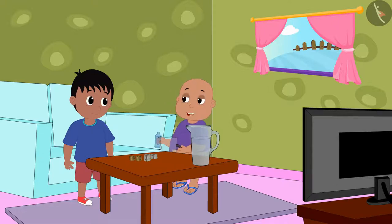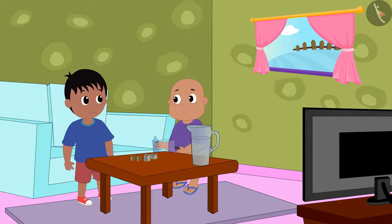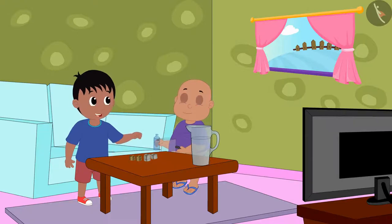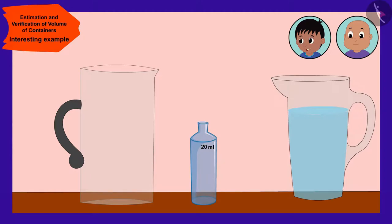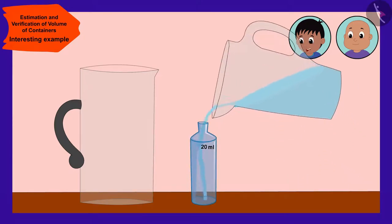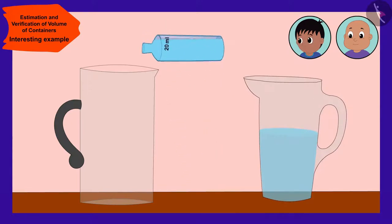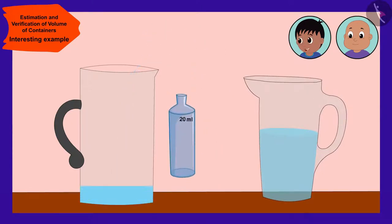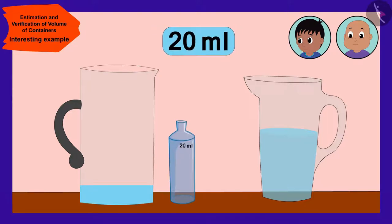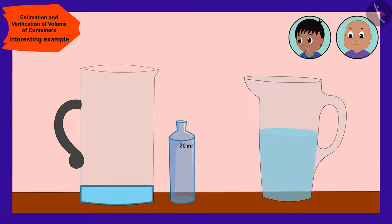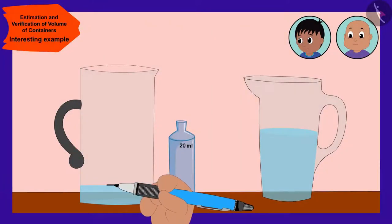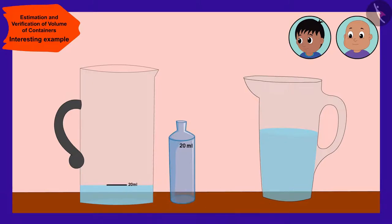And I have brought this jug too. First, we will fill this empty bottle completely with water. Then, we will empty the bottle in this jug. Because the volume of the bottle is 20 ml, we can say that the jug currently has 20 ml of water. With a pen, we will mark 20 ml of water in this jug at that level of water. Bablu quickly made a mark of 20 ml at the level of water filled in the jug.